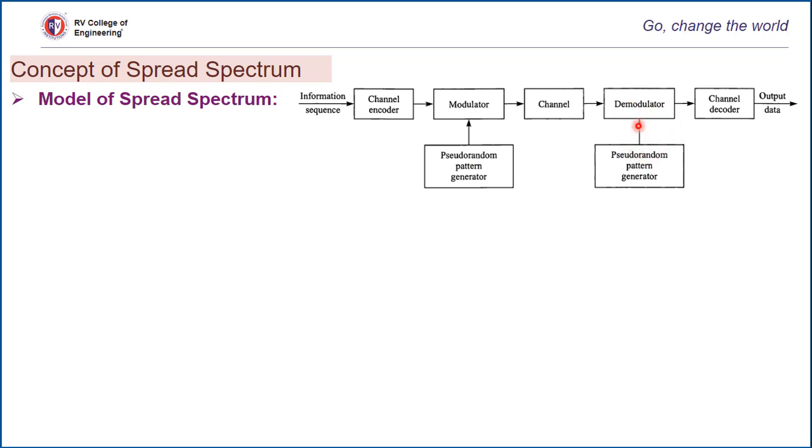The pseudorandom generators generate a pseudorandom or pseudonoise (PN) binary valued sequence which is impressed on the transmitted signal at the modulator and removed from the received signal at the demodulator.